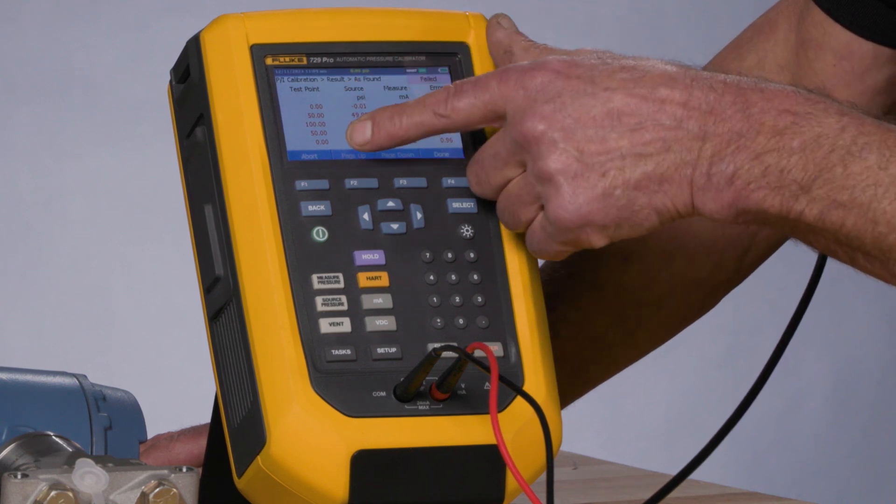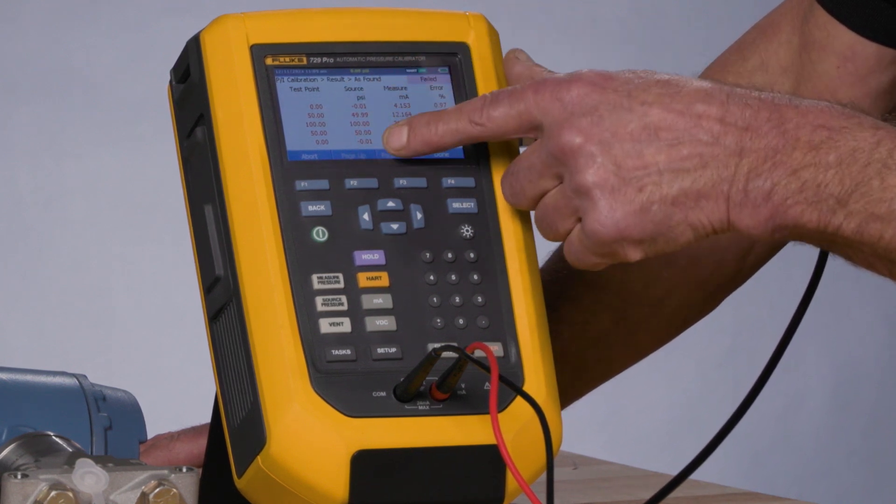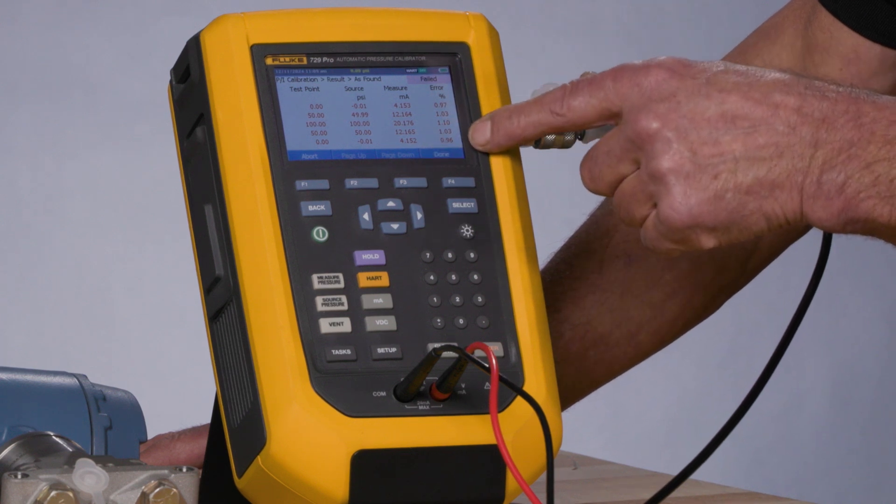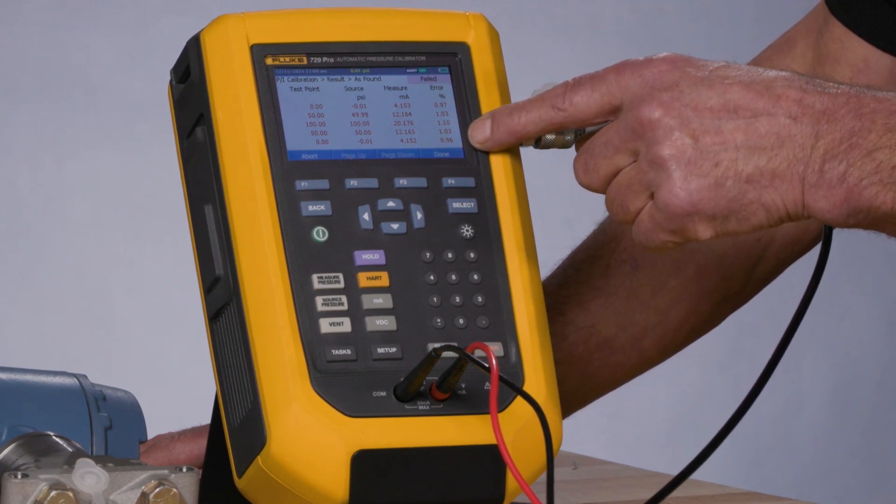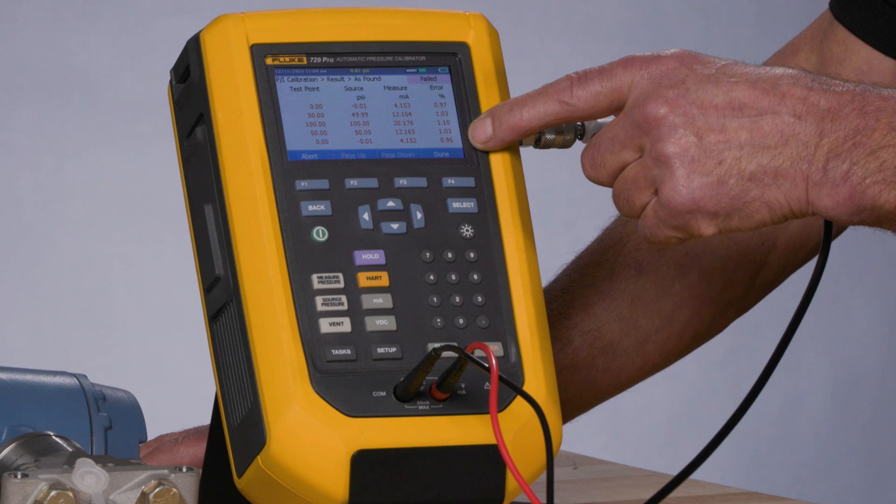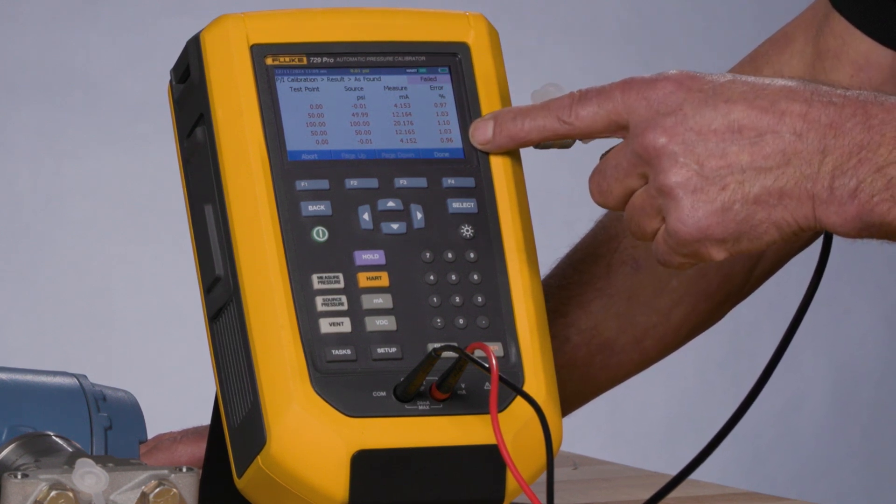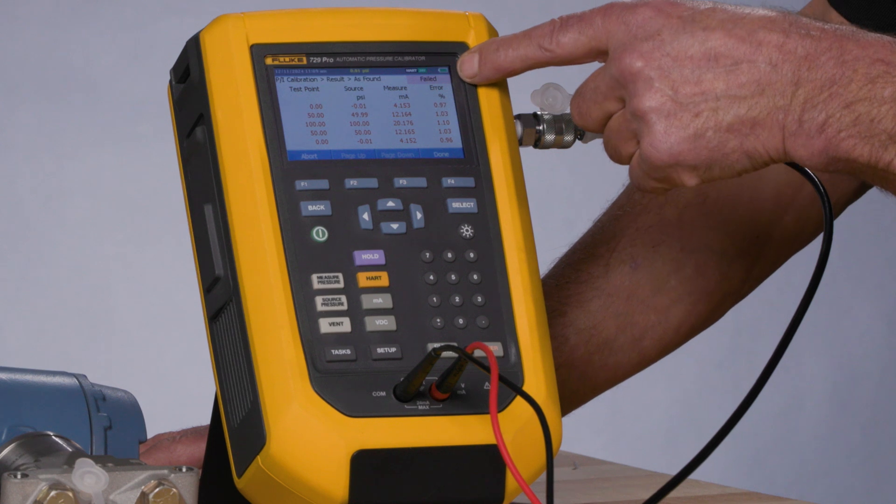So here's our post-test summary. Here's the ideal test point pressure, the actual applied pressure, the milliamp value that was measured, and the milliamp error percent is shown. Now since we had a 0.2% test tolerance typed in for our test, all of these errors are out of that particular test tolerance, and this is showing as a failed-as-found test.